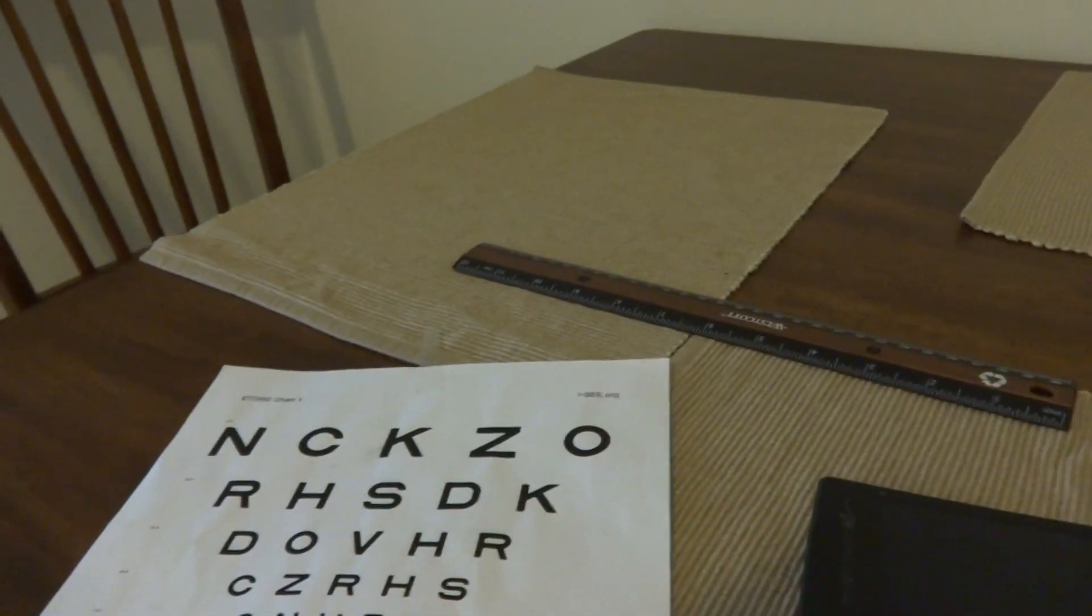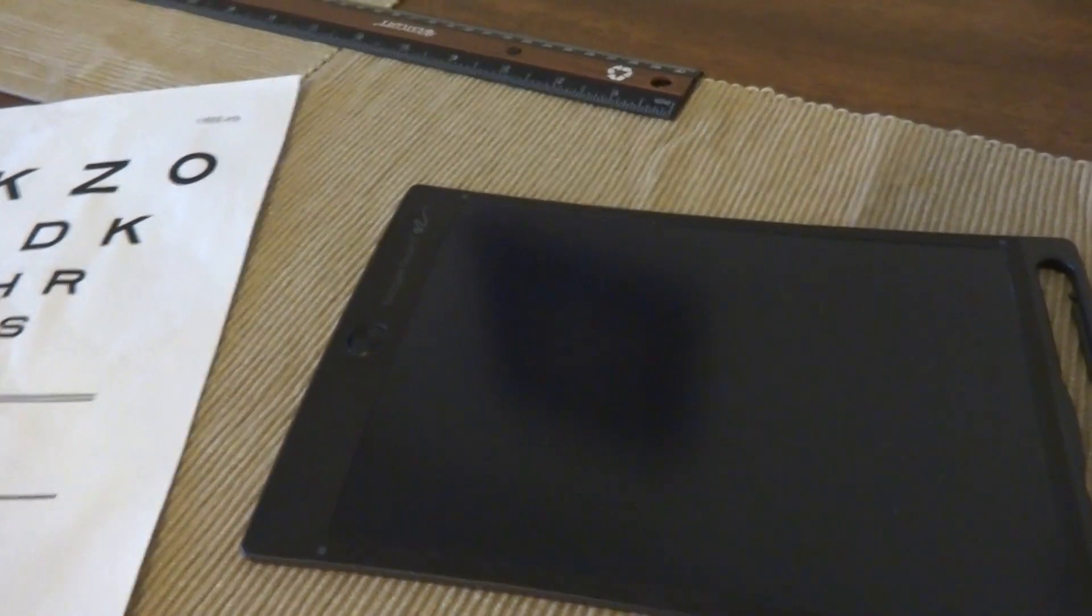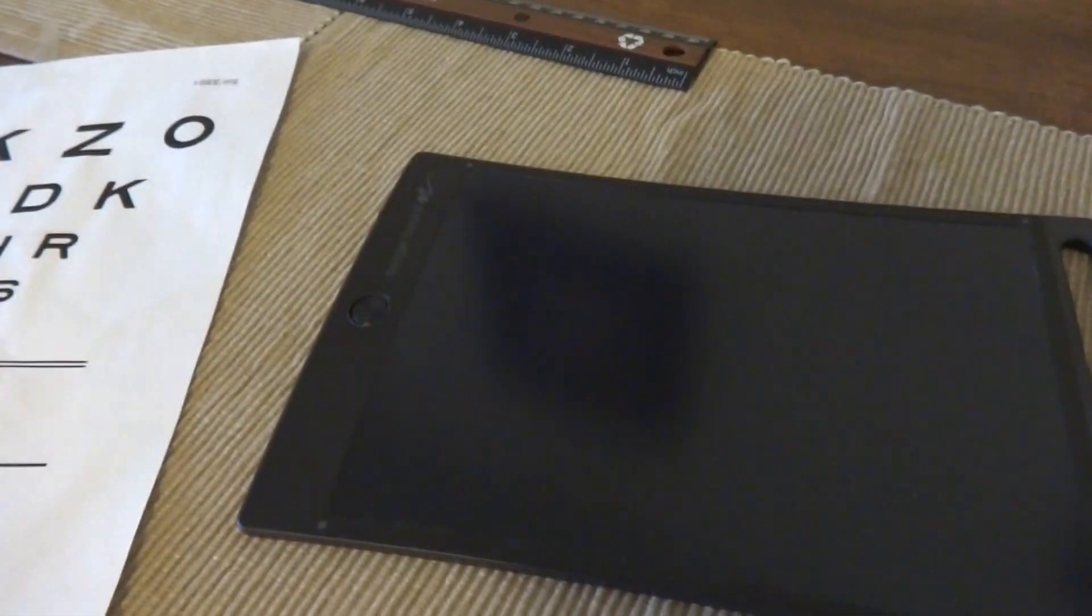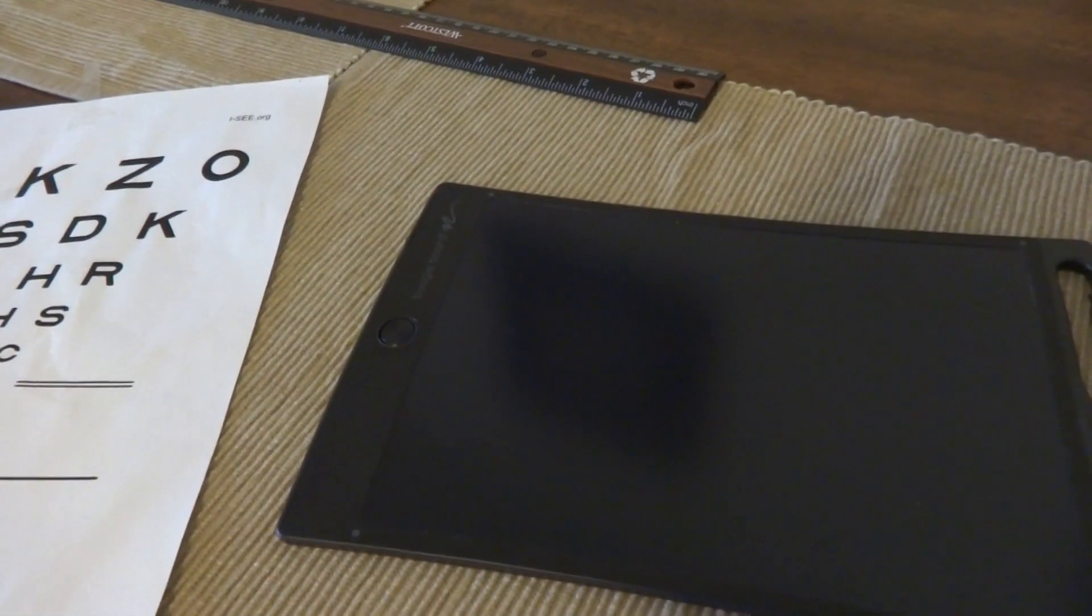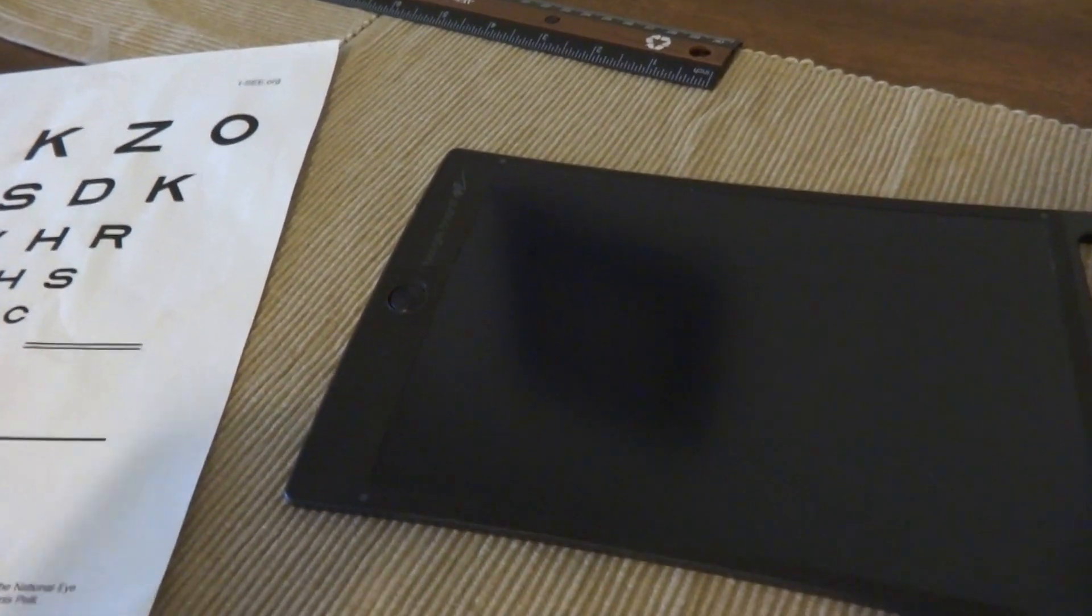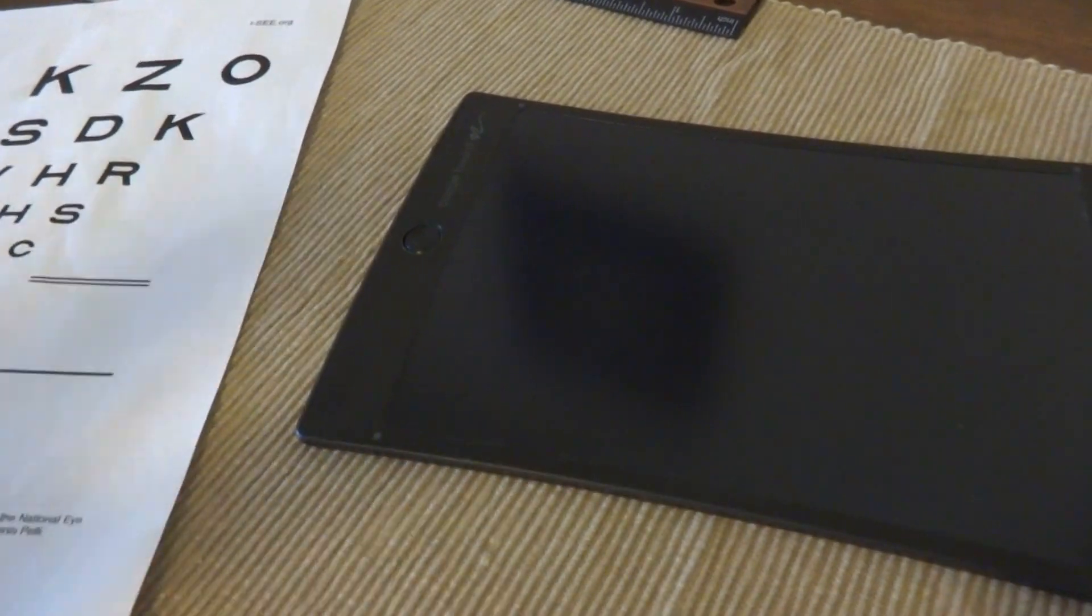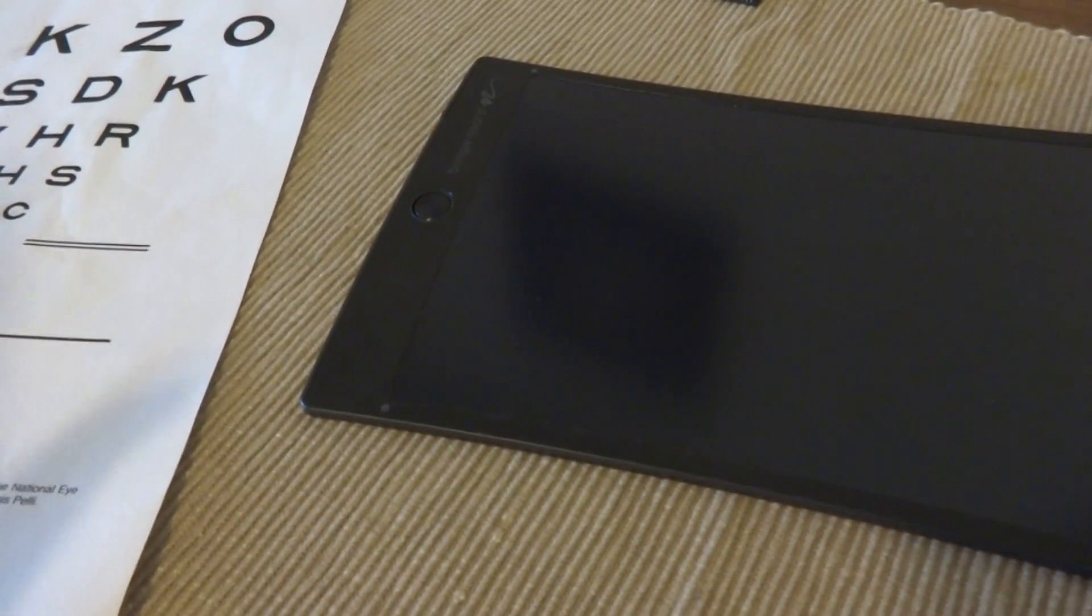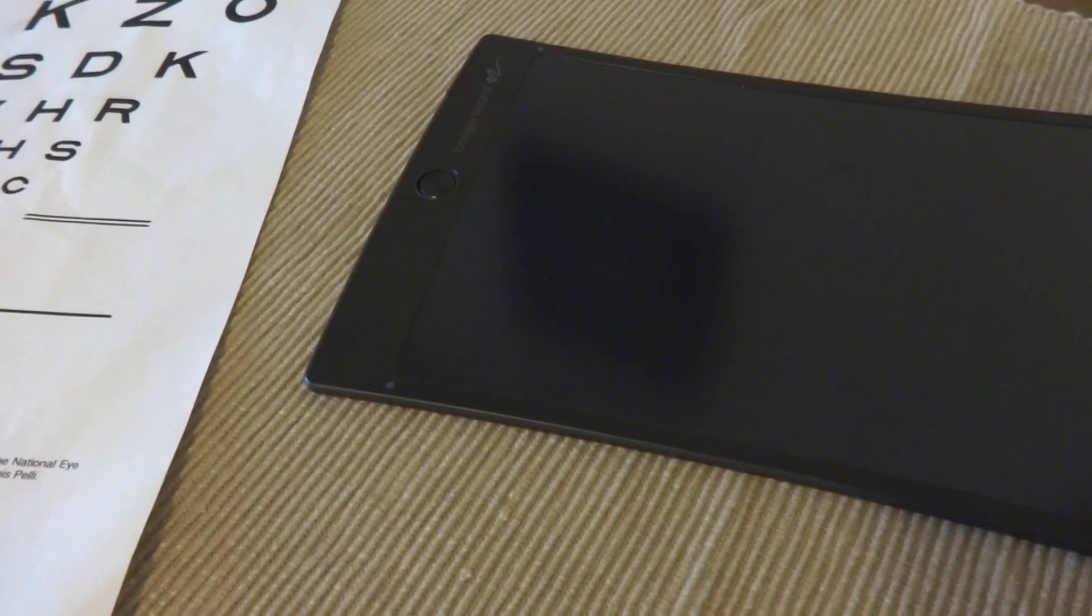So there you have it. Visual acuity is expressed as an angle, and that angle is to represent basically what something is projected onto the retina - what that size is going to be. And the easiest way to express that is with an angle. Hope that makes sense.